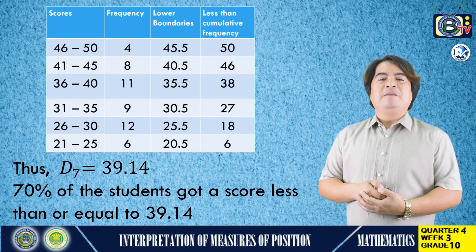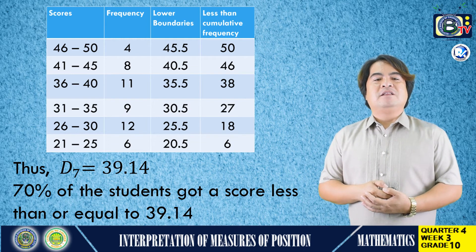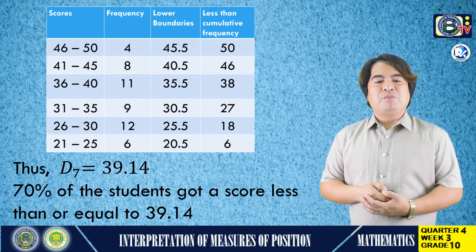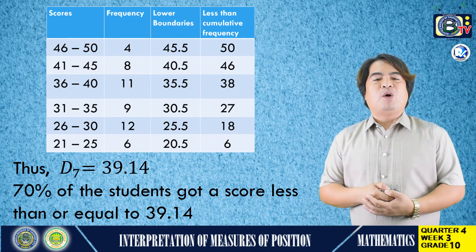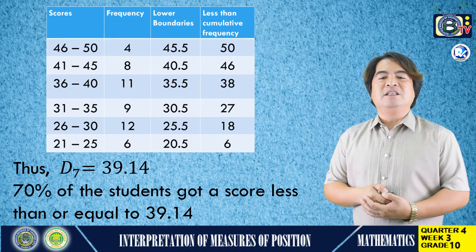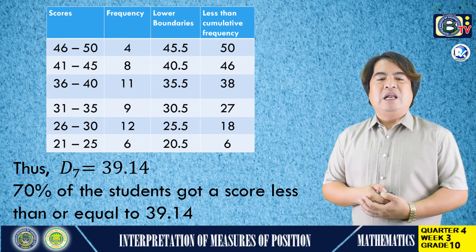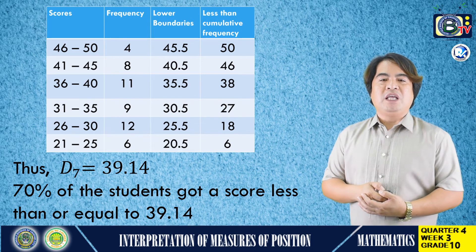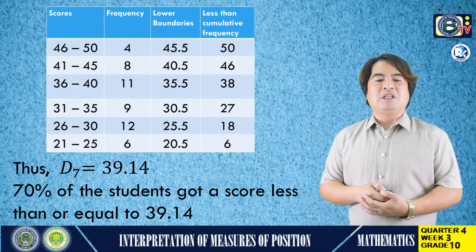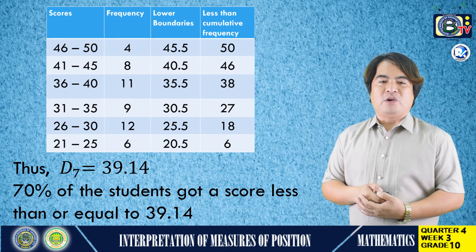Substituting the given values into the formula: decile 7 equals the lower boundary plus (decile 7 class minus cumulative frequency) divided by the frequency of decile 7, multiplied by the interval. Decile 7 equals 39.14. We can now conclude that 70% of the students got a score less than or equal to 39.14.